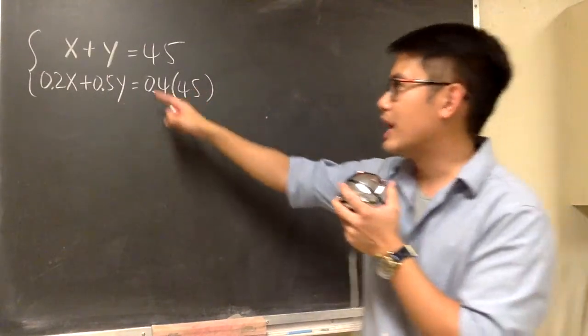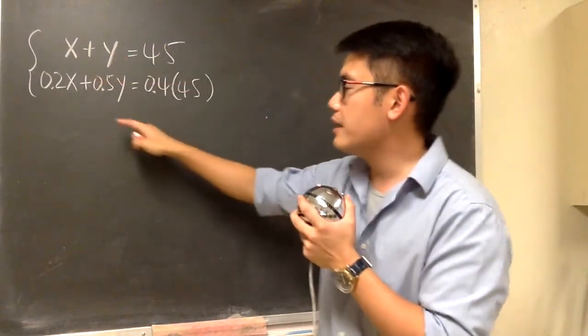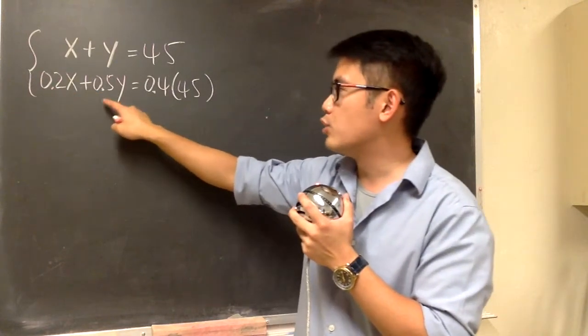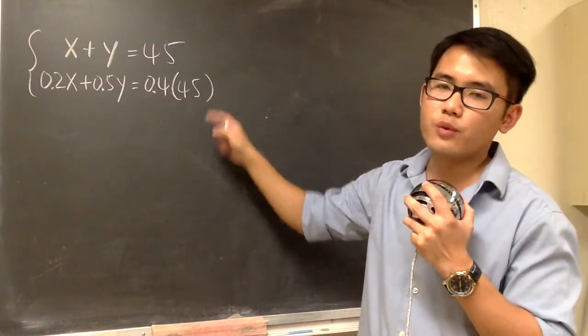We are going to solve this system of equations. We have x plus y is equal to 45, and we have 0.2x plus 0.5y is equal to 0.4 times 45.